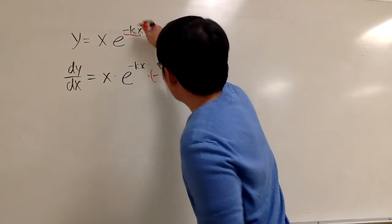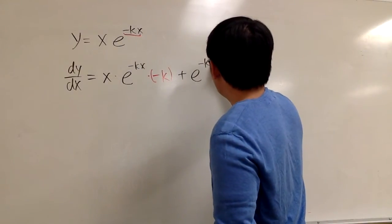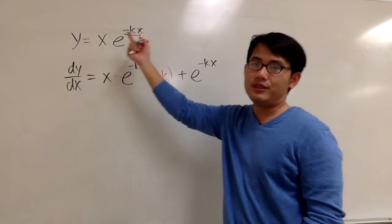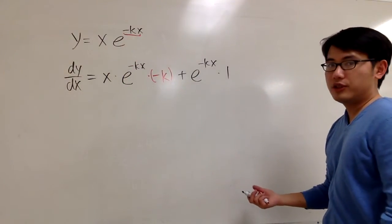And then we are going to add the second function, which is e to the negative kx, multiply by the derivative of the first, which is just going to be 1. And that's pretty much it.